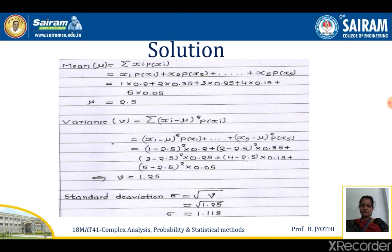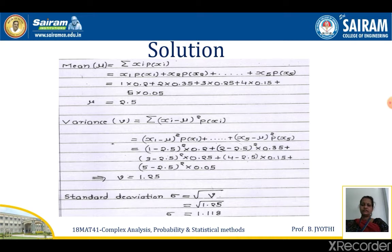Solution. The mean formula is given by Σ xi · p(xi). Expanding the summation: x1·p(x1) + x2·p(x2) + ... + x5·p(x5), which gives 1×0.2 + 2×0.35 + 3×0.25 + 4×0.15 + 5×0.05. This gives on simplification a mean of 2.5.